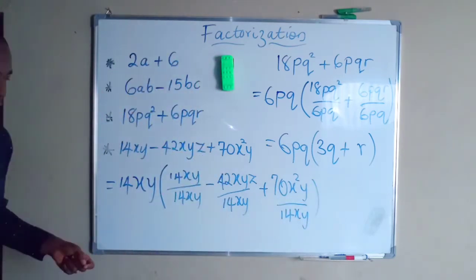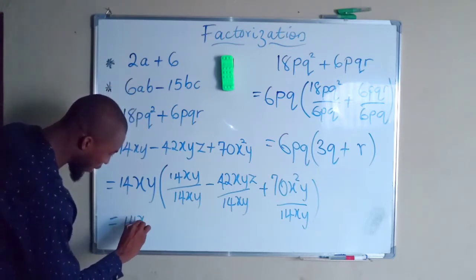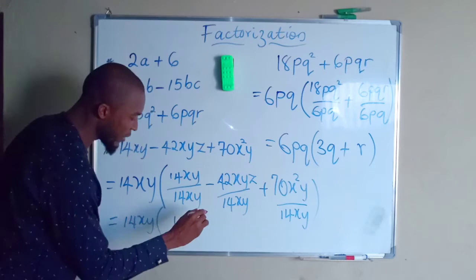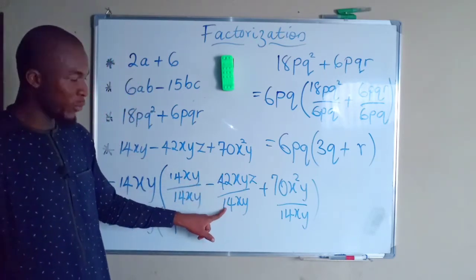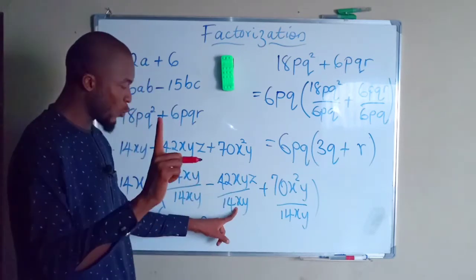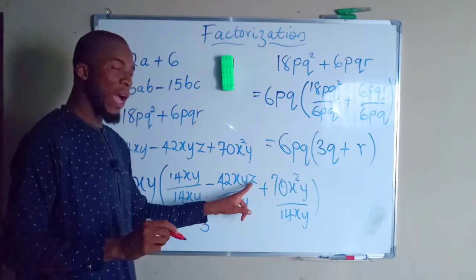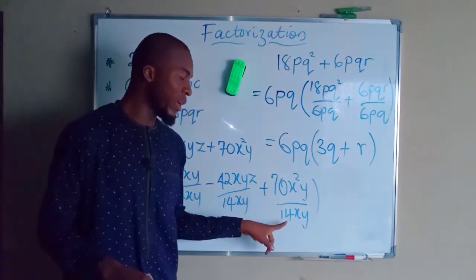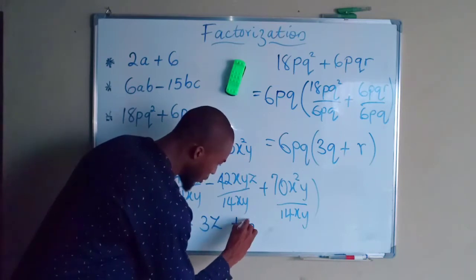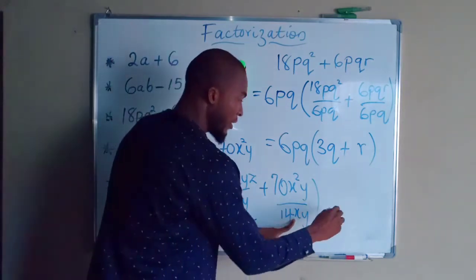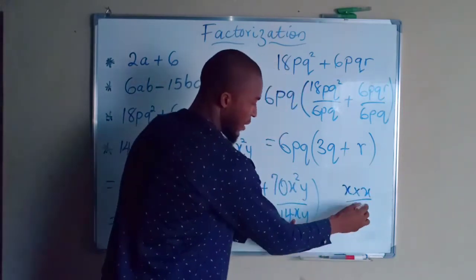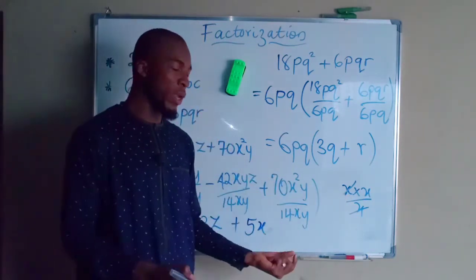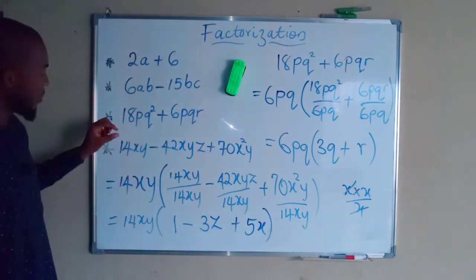In the bracket we divide each term by 14xy. The first term divided by 14xy gives 1. Then minus 42xy·z divided by 14xy: 42 divided by 14 is 3, x divided by x is 1, y divided by y is 1, leaving z. Then plus 70x²y divided by 14xy: 70 divided by 14 is 5, x squared divided by x leaves x, y divided by y is 1. So the factorized form is 14xy(1 − 3z + 5x).